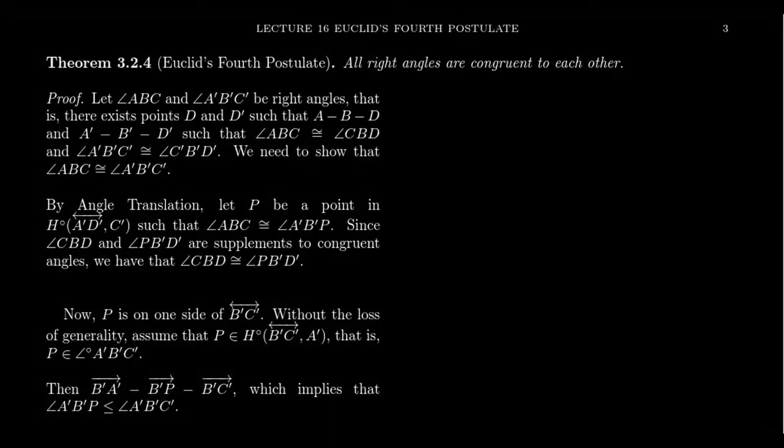We want to prove Euclid's fourth postulate, and we're going to prove this as a theorem of congruence geometry. It might seem weird — how can you prove a postulate? Isn't this something like an axiom you just assume to be true? Well, it's called Euclid's fourth postulate because in The Elements, written by Euclid, he took this as his fourth postulate of geometry, which later became known as Euclidean geometry.